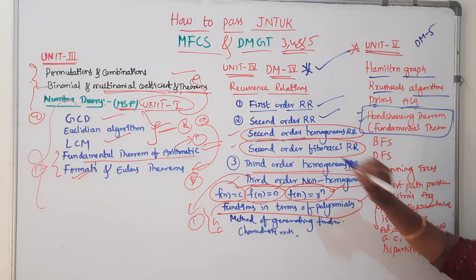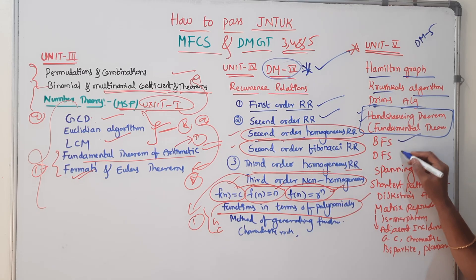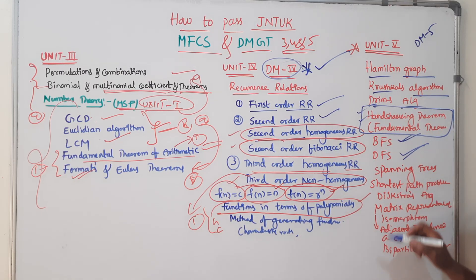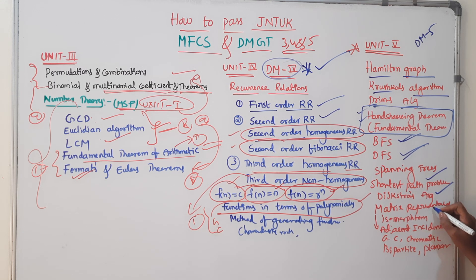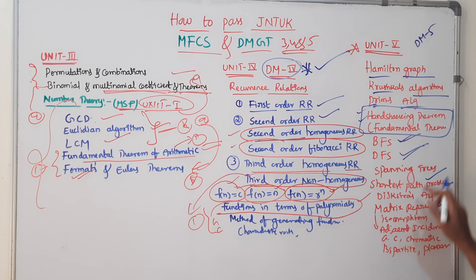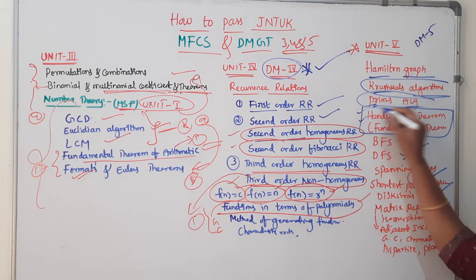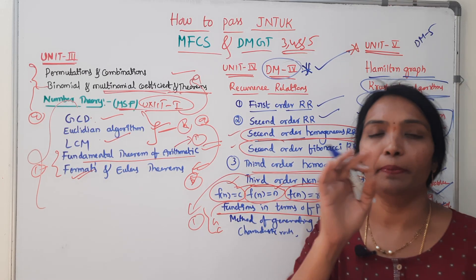Check it out — this is DM Unit 4. Then BFS, DFS, spanning tree — finding spanning tree by using BFS and DFS. In the shortest path problems: Dijkstra's algorithm, matrix representation. Dijkstra's algorithm, Kruskal's algorithm, Prim's algorithm, BFS, DFS — these four are compulsory questions. These four are in the question paper.